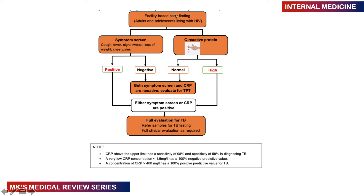The screening algorithm for HIV patients: screen for symptoms (cough, fever, night sweats, weight loss, chest pain). If symptoms are negative, do a CRP — if normal, TB is unlikely and the patient goes on TB preventive therapy. If symptoms are positive or CRP is positive, evaluate the patient for TB and start treatment if confirmed; if TB is ruled out, put them on prophylaxis. The turnaround time for CRP is three to five minutes, allowing quick evaluation.